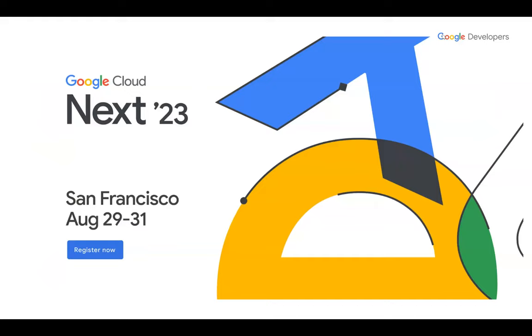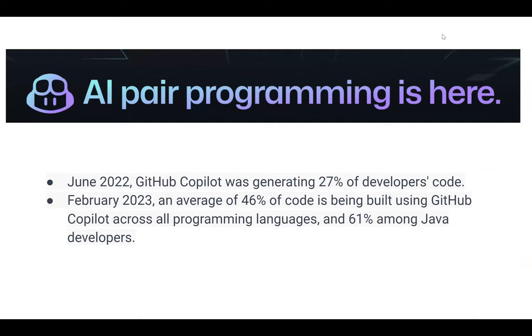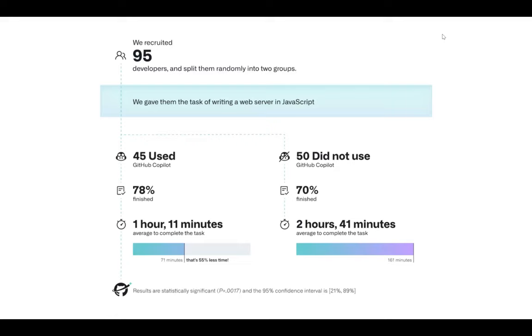A tool available to the general public is GitHub Copilot, and they did share some numbers. In June 2022, about 27% of code generated was made with GitHub Copilot. As you may know, it's a plugin for VS Code. There's been obvious growth — by February 2023, already 46% of code is being generated with this AI system tool. Apparently, for some reason, 60% of Java developers are using Copilot.